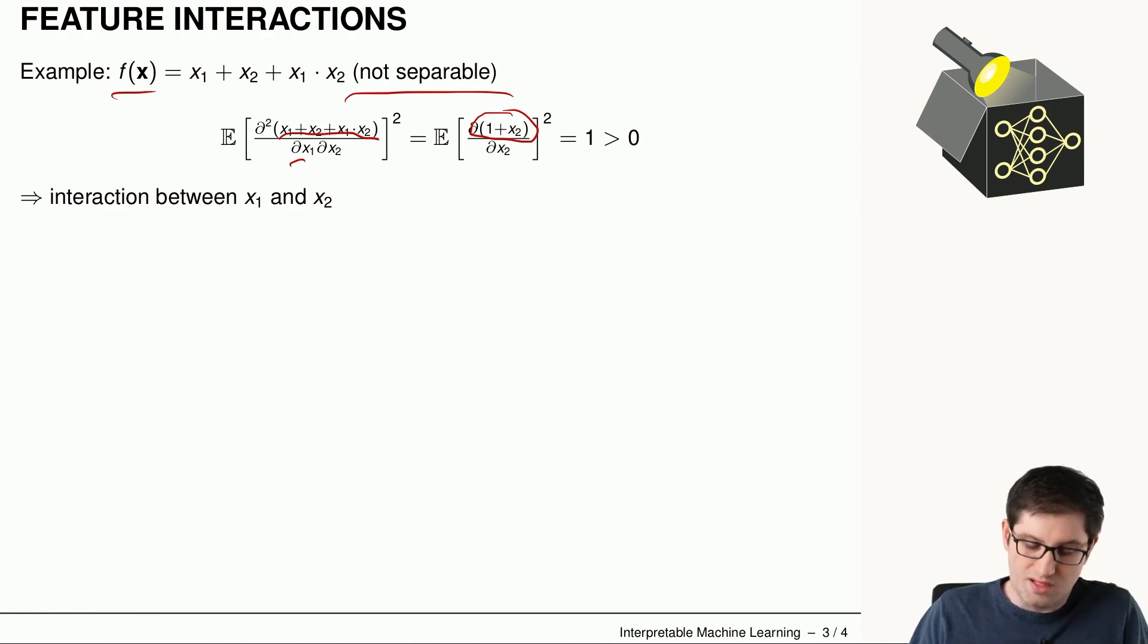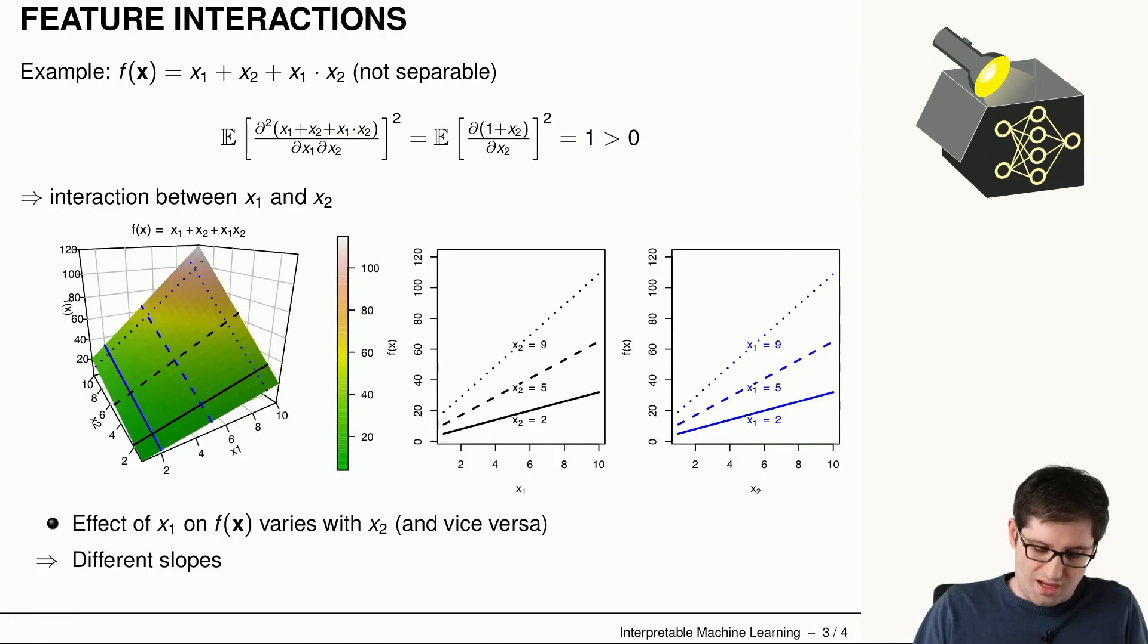Because if we take the derivative with respect to x2, the result is 1 and also 1 to the square is 1. And we end up in a value larger than zero. This means that we can assume that there is an interaction between x1 and x2.